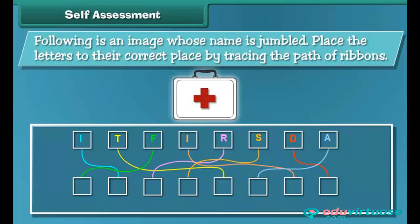Self-assessment: Here is an image whose name is jumbled. Place the letters in their correct place by tracing the path of ribbons.